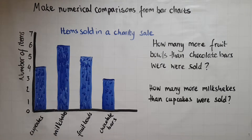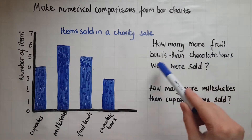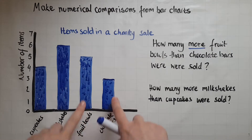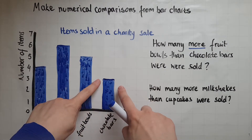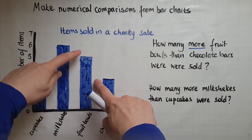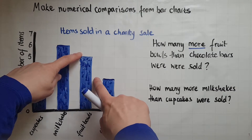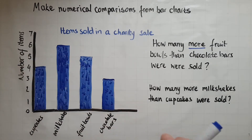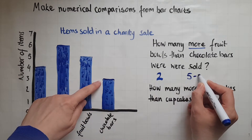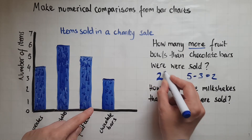Now here we'll make some numerical comparisons. How many more fruit balls than chocolate bars were sold? There are three chocolate bars and there are five fruit balls, so there are two extra, or two more. If you want to show the working out, you could do five take away three equals two, but all you need is that two.